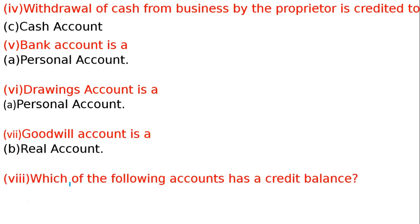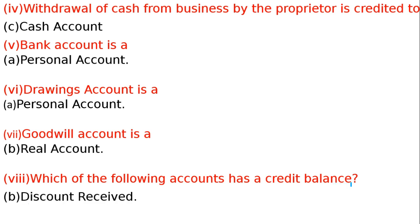Next question: Which of the following accounts has a credit balance? From the 4 options given, the answer is discount received — hamare discount mila, discount received is a credit balance. Discount allowed is a debit balance and discount received is a credit balance, because any income earned is a credit balance.